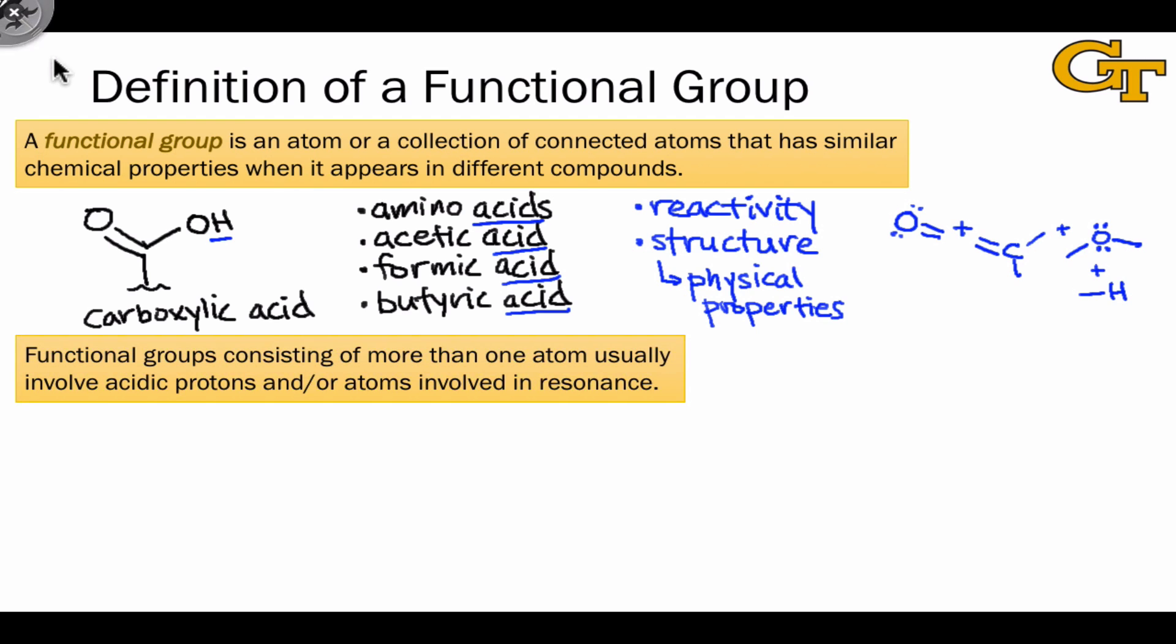In the carboxylic acid, we see an example of a functional group that involves both an acidic proton and resonance structures. The acidic proton is here, and because this oxygen bears a lone pair and is adjacent to a carbon-oxygen pi bond, the functional group is characterized by resonance as well. The atoms engaged in resonance within a molecule typically define the limits of where we sort of draw the line or draw a circle around a functional group.